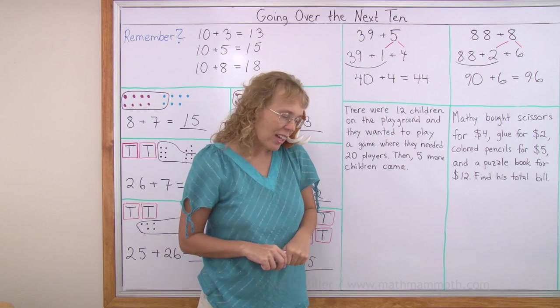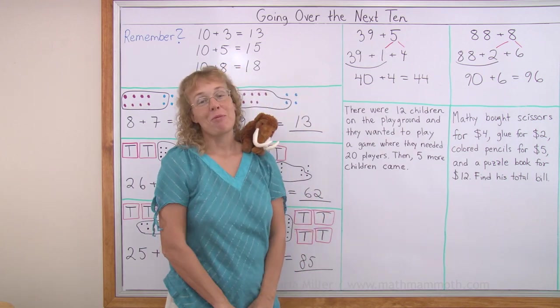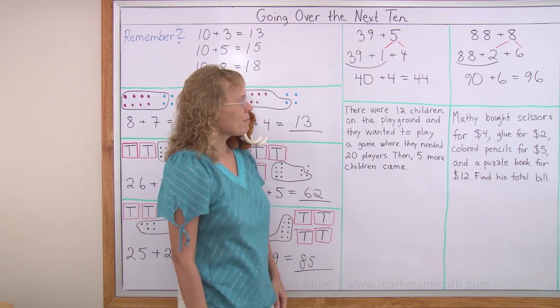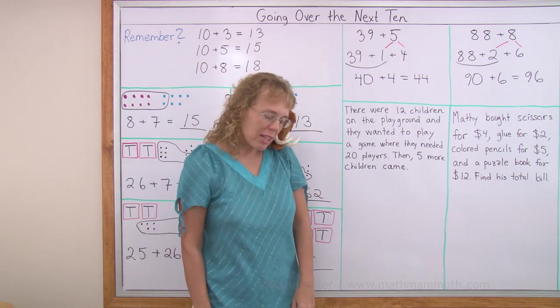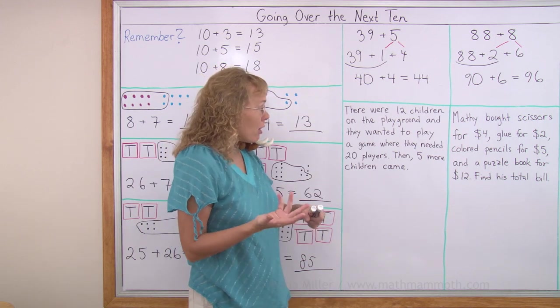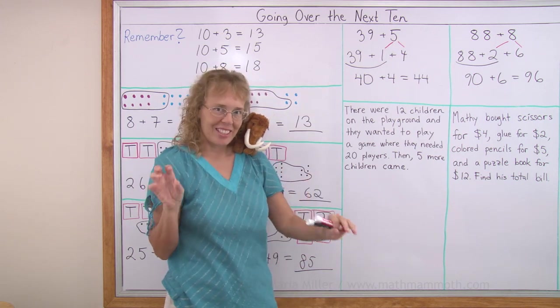Because there were 12 and then 5 more came. Mathie? Ah, yeah, we could ask what game they are going to play. But that's not the math word problem. What game are they going to play? I don't know. Softball? Just whatever, where you have 10 and 10 in each team.